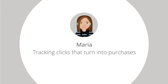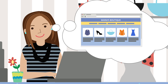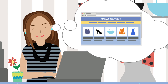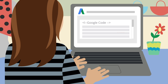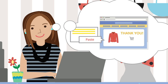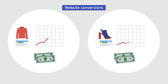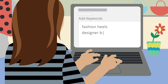Maria — tracking clicks that turn into purchases. Maria owns a clothing boutique. She recently started selling her clothes online and wants to know if her ads are boosting her online sales. She has an ad campaign for jackets and another for shoes. To track conversions, she adds a single snippet of JavaScript code to the confirmation page her customers see after making a purchase. She learns that her jacket ads are generating a lot of sales, but her shoe ads are not. So she puts more of her advertising budget toward her jacket ads and improves the keywords and ads for her shoe campaign to increase conversions in the future.